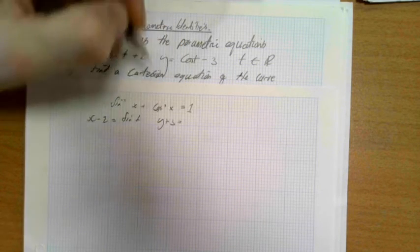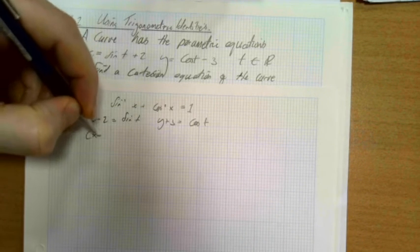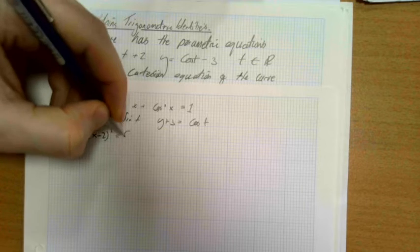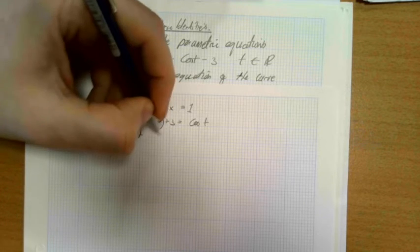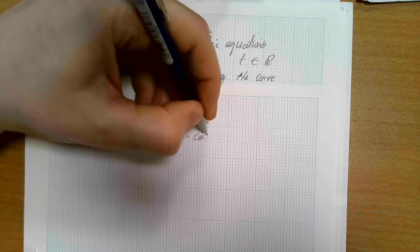And of course that means that (x minus 2) squared is going to be sine squared t, and (y plus 3) squared is going to be cos squared t.